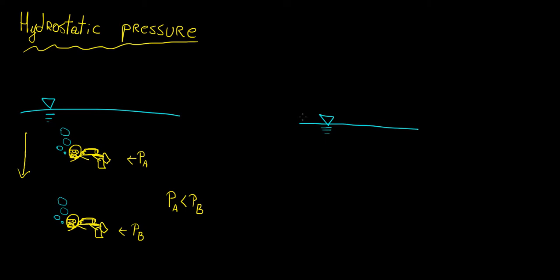Suppose we have a water surface, and let's draw a point A and a point B. We want to know what the pressure at A is compared to the pressure at B — what the difference in pressure between those two arbitrary points is. Now obviously pressure is force over area, so in order to calculate the difference in pressure, we're going to need to use some sort of area. To do that, we're going to draw something very simple.